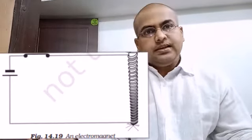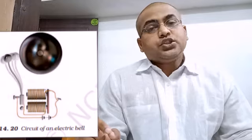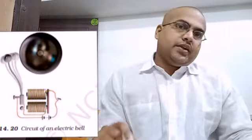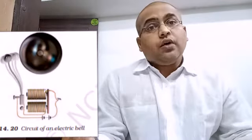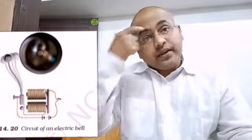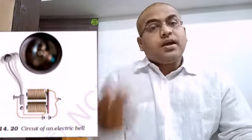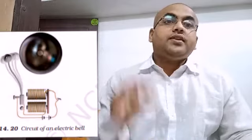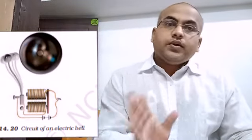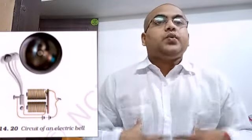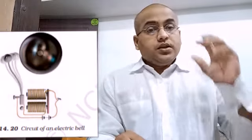During the flow of current the nail behaves like a magnet, but if you stop the flowing of current it will behave as a normal nail. This is called electromagnet. We can increase the strength of the electromagnet by increasing the coiling, the number of coilings. If you increase, the strength of the electromagnet will increase. If the number of coiling decreases, the strength of the electromagnet will decrease.